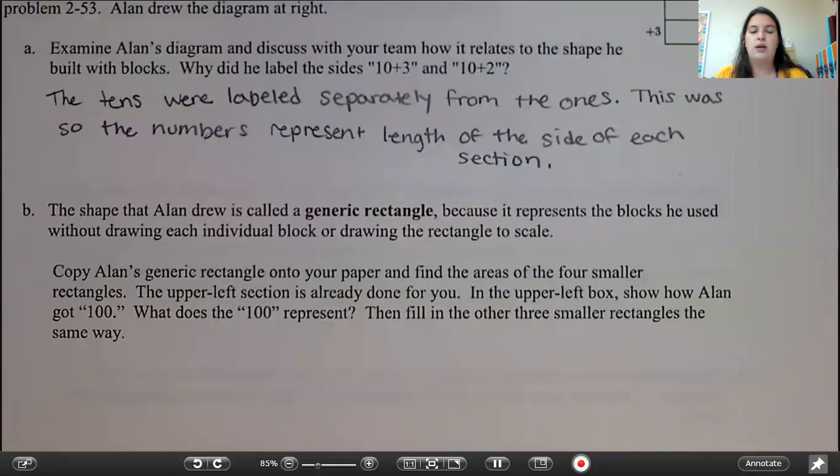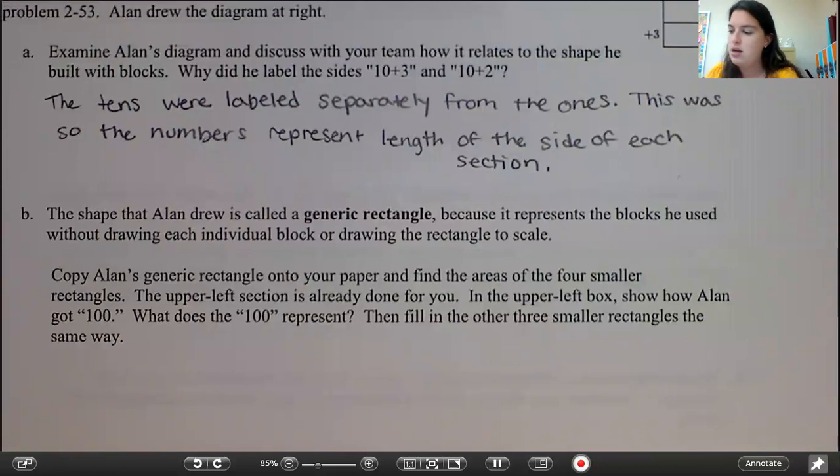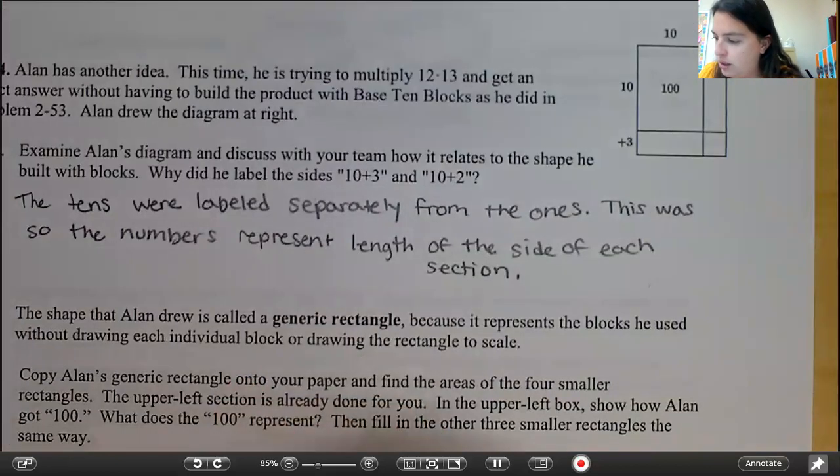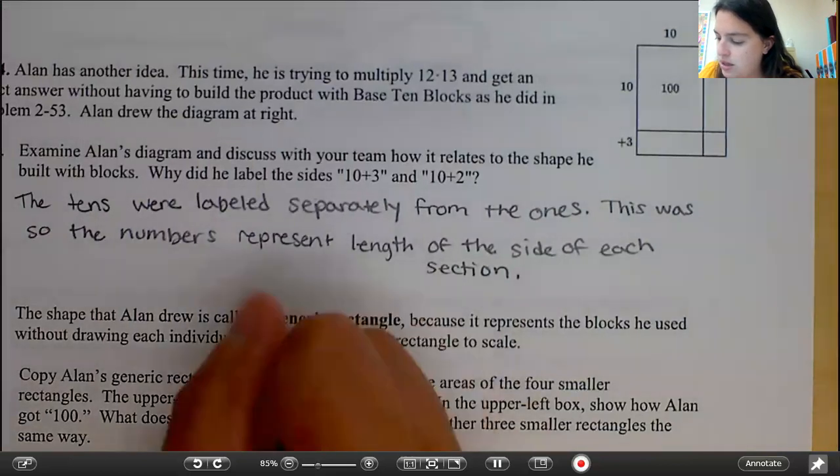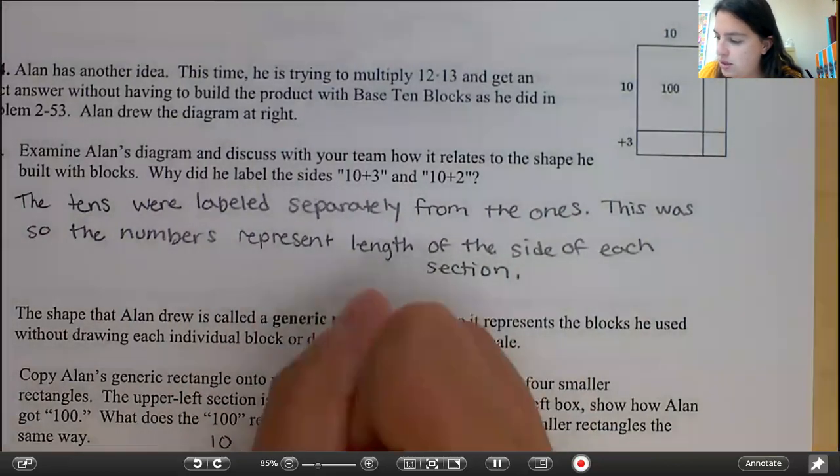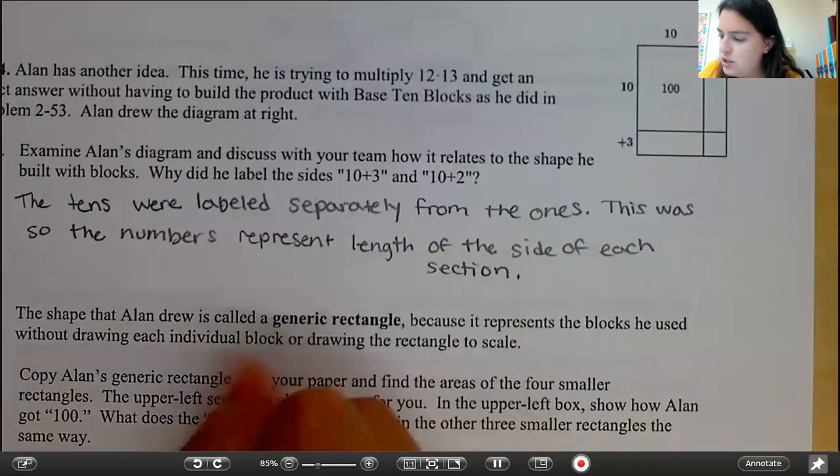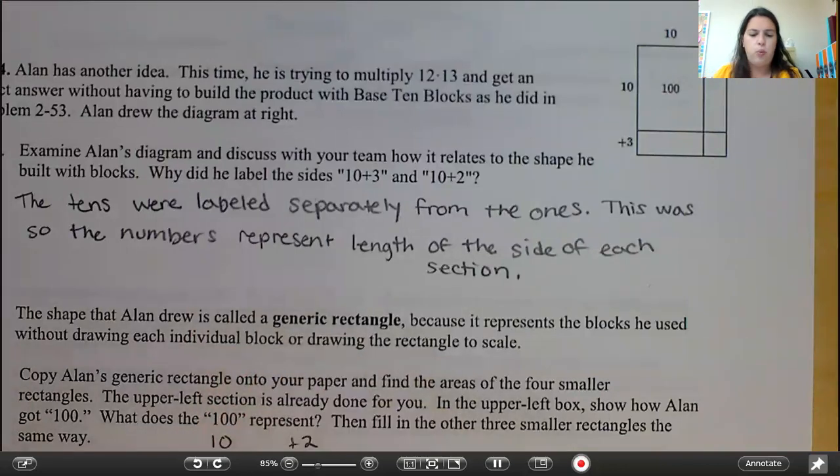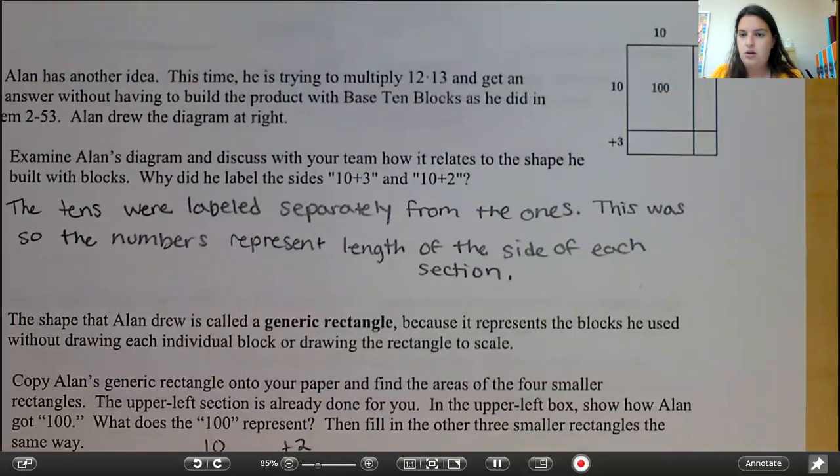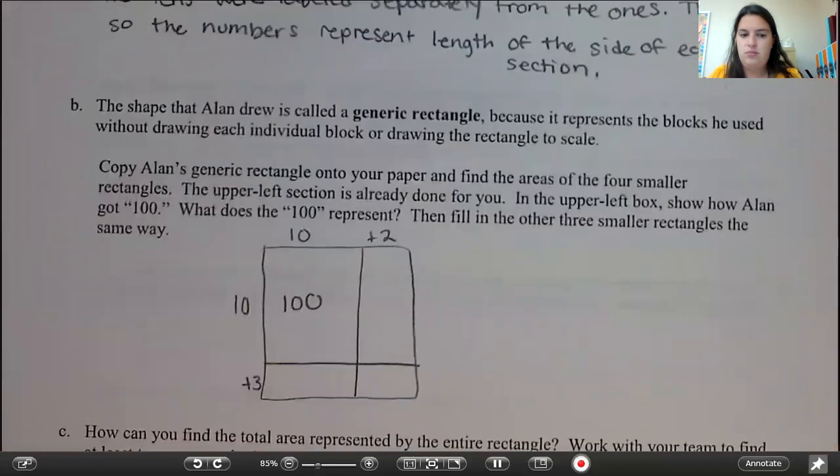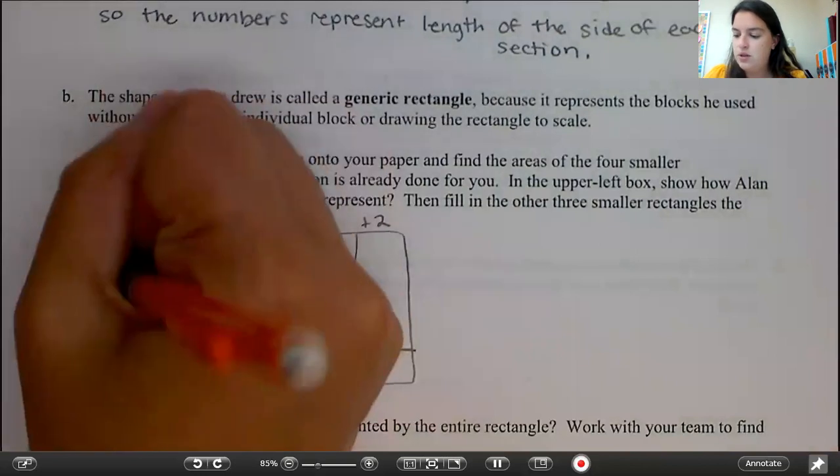Copy Alan's generic rectangle onto your paper and find the area of the four smaller rectangles. The upper left section is already done for you. In the upper left box, show how Alan got 100. What does 100 represent? Then fill in the other three smaller rectangles the same way. So I am going to copy this down, even though it's already on our paper, just to give us a little bit more space. So 10 plus 2, and then we have 10 plus 3. So this box is filled in 100. Well, why is it filled in 100? We're finding area, so 10 times 10 gives you that 100.